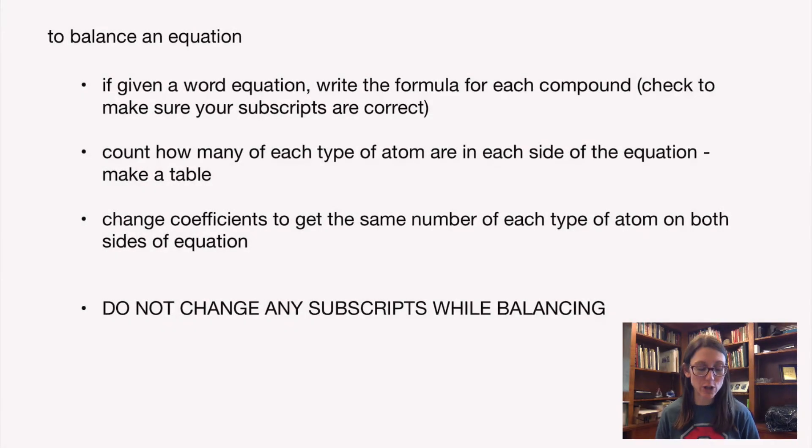The process you're going to use to balance a chemical equation: First, if you're given a word equation, you have to start by writing the formula for each compound. You have to turn those words into something that tells you how many of each atom and element type is in each chemical compound.